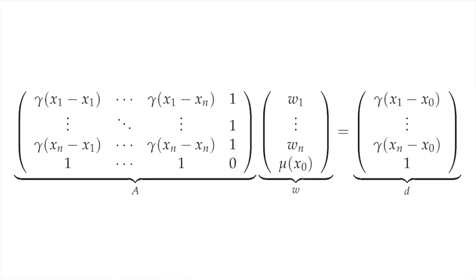So, if we look at the system of equations for ordinary kriging, we can put all the distance values. Here, x0 is the interpolated point, x1 to xn are the sample points within its search radius, and w1 to wn are the weights that we give to the value of points x1 to xn. If we look at the three big matrices here, A, w and d, the weight matrix is the unknown one that we need to calculate.